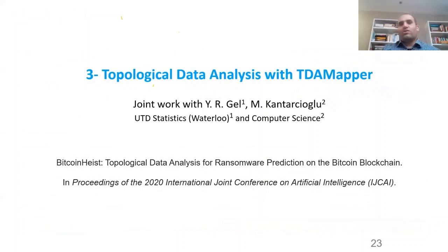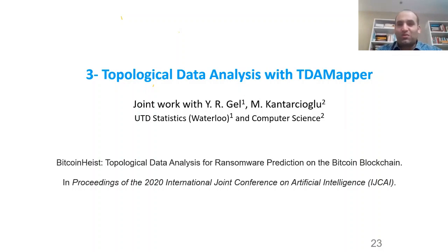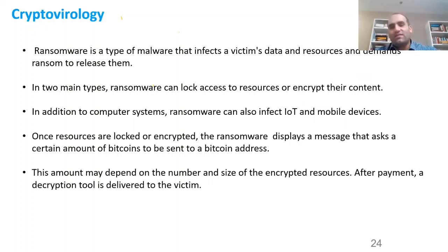The third work is about ransomware. The paper is called 'Bitcoin Heist,' with Yulia and Murat again, and we do topological data analysis for ransomware prediction on the Bitcoin blockchain, published in 2020. Ransomware is a growing concern — it is a type of malware that infects a victim's data and resources and demands ransom for release.